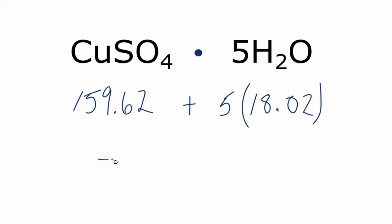When we do that, we're going to end up with the molar mass for the compound, the CuSO4·5H2O, and that is 249.72, and our units are grams per mole.